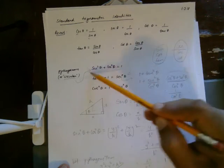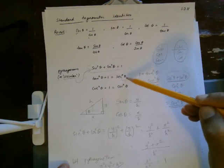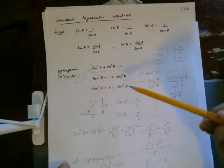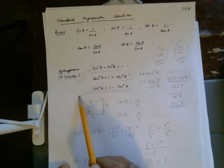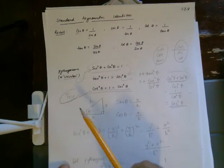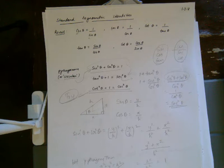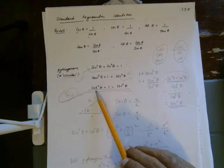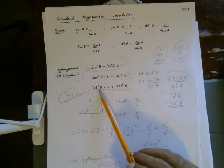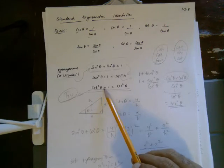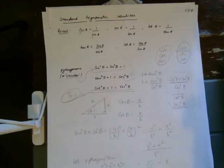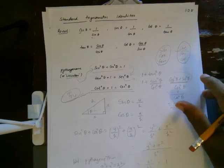You essentially just have to remember one identity and the other two follow. You can try to show the third one on your own using the fact that cotangent is cosine over sine, so cotangent squared would be cosine squared over sine squared. Based on these identities, you can have problems like the following.